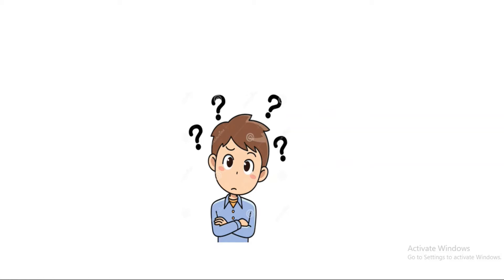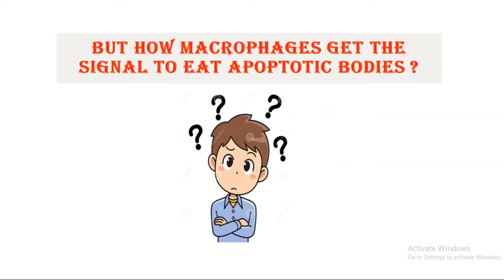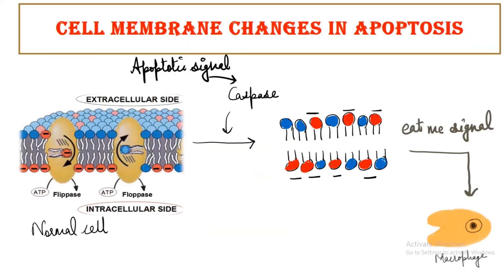Now you must be wondering how the macrophage comes to know that it has to eat this apoptotic body. The answer to this question is the change in the cell membrane polarity.